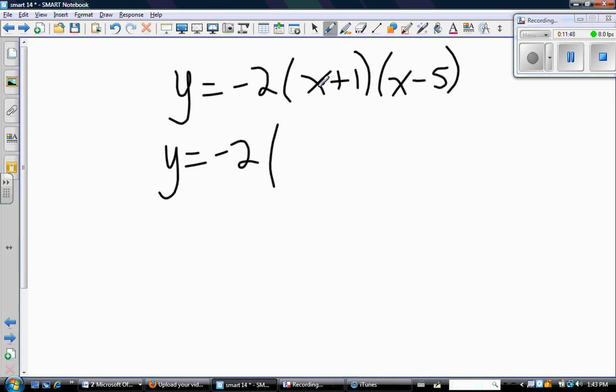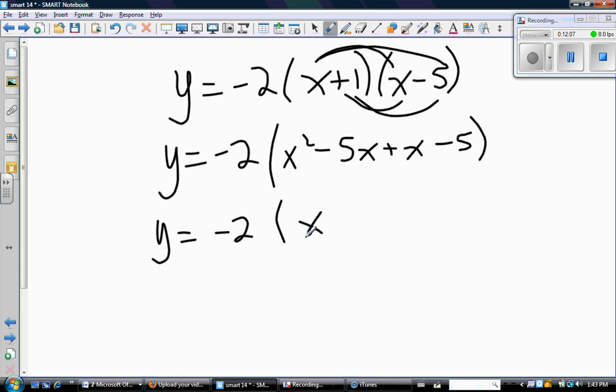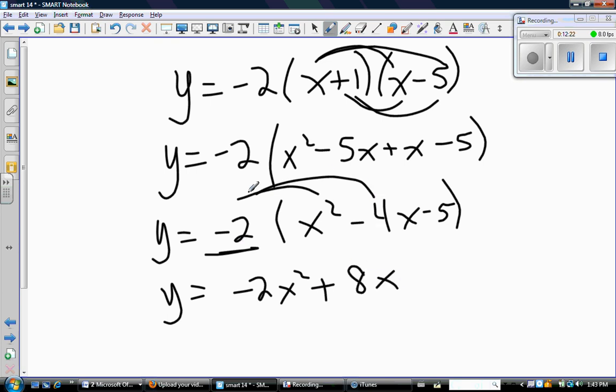And then I'm going to do algebra and turn it into standard form. So that means I'm going to multiply everything together. So doing FOIL, x times x is x^2. x times -5 is -5x. 1 times x is positive x. And 1 times -5 is -5. So collect like terms inside of that bracket. I get x^2 - 4x - 5. And now I'm going to multiply everything by -2. So -2x^2, -2 times -4x is positive 8x, and -2 times -5 is positive 10. So there it is in standard form.